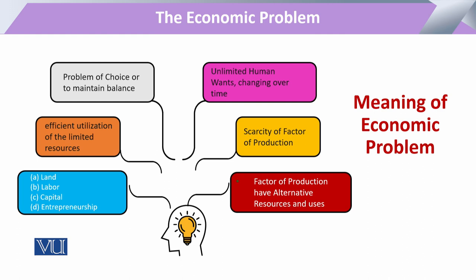और इसी की form में अगर हम capital की बात कर रहे हैं, तो available form of machinery, available form of expertise, knowledge, technology — ये भी हमारे पास resources की form में होगा। तो उसको ये देखना होगा कि जो available resources हैं वो मेरे पास कितने हैं।